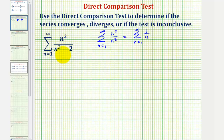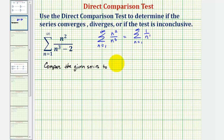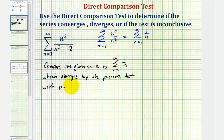But in our case, because we're comparing our series to a known diverging series, we want to show the terms of this series are greater than or equal to the terms of, in this case, the harmonic series. So we'll compare the given series to the harmonic series — the summation from n equals one to infinity of one divided by n — which diverges by the p-series test with p equals one, which is less than or equal to one. We do want to give a reason as to why the series we're comparing it to converges or diverges.